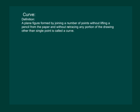The same definition of the curve can be understood in a different approach. According to the definition, a plane figure formed by joining number of points without lifting a pencil from the paper and without retracing any portion of the drawing other than the single point is called a curve. That means we are imagining that there are a number of points on the plane, and if we can join these points without lifting our pencil, the figure so formed will be a curve.